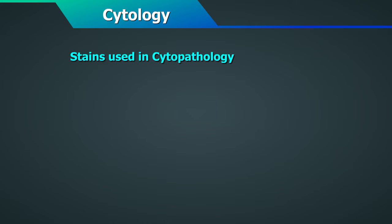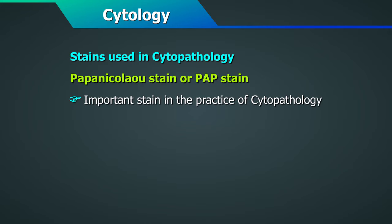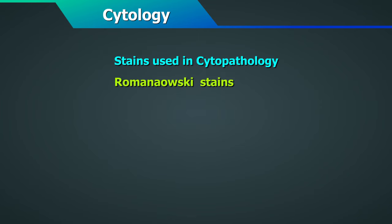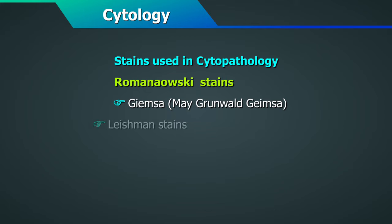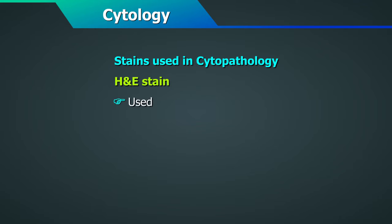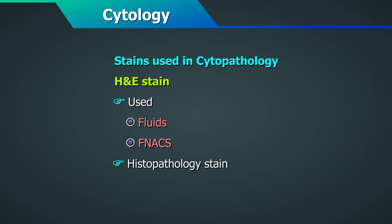Stains used in cytopathology: First, Papanicolaou stain or PAP stain is the most important stain used in the practice of cytopathology. It is used for both cervical smears and exfoliative cytology smears. Second, Romanowski stains — Giemsa, MGG (Maegrenwald-Giemsa) or Leishman stains — are used for FNACs and for fluids. Third, H&E stain is also used in fluids and FNACs. The H&E stain is mainly a histopathology stain. Pap smears are generally stained by PAP staining, which will be described in this section.